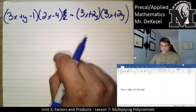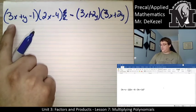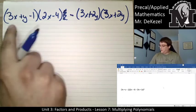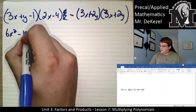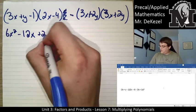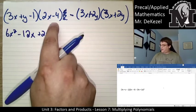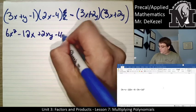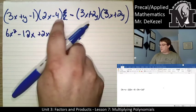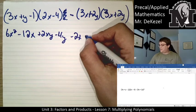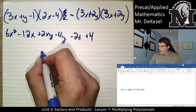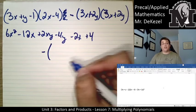So let's get right into it here. 3x times 2x, that's 6x squared. And then 3x times minus 4 is minus 12x. Y times 2x is plus 2xy. Y times minus 4 is minus 4y. Minus 1 times 2x is minus 2x. Minus 1 times minus 4 is plus 4. We are then going to subtract this entire thing here.